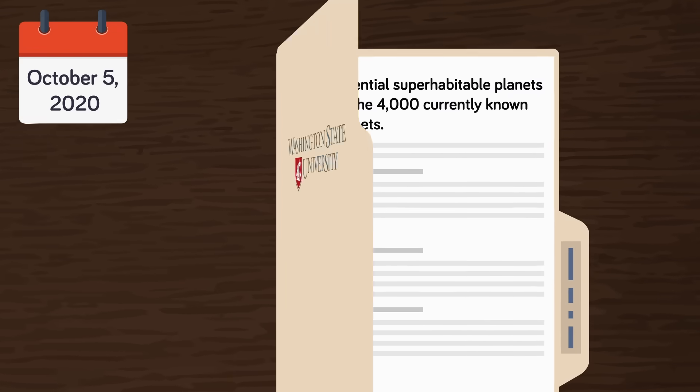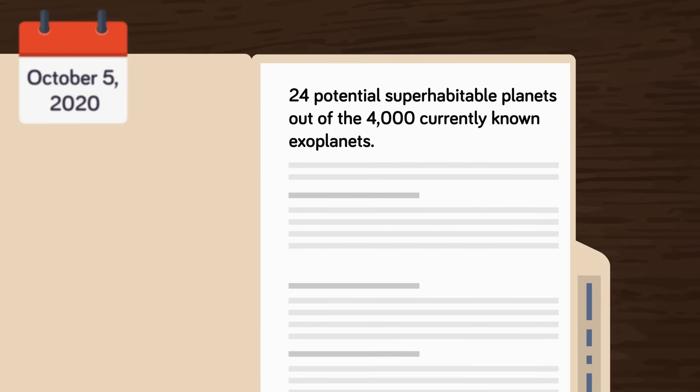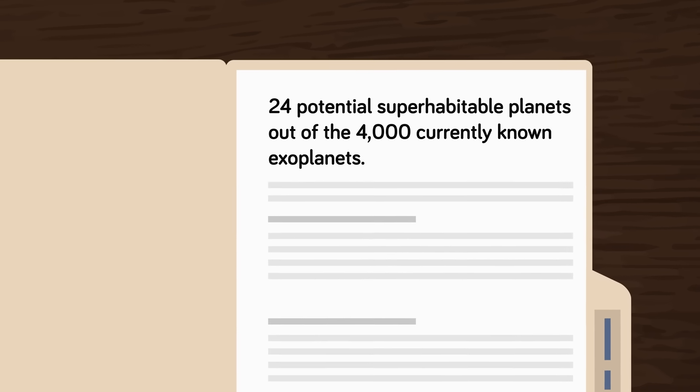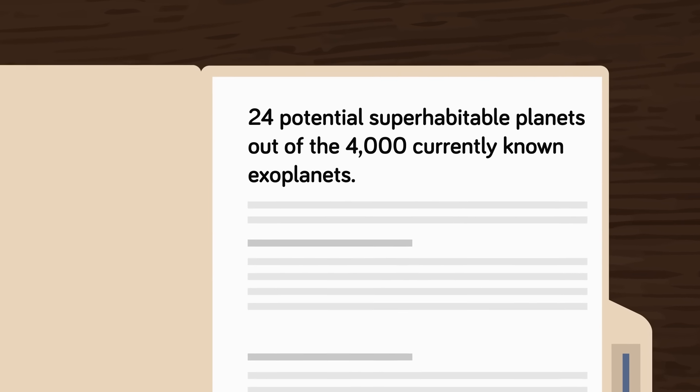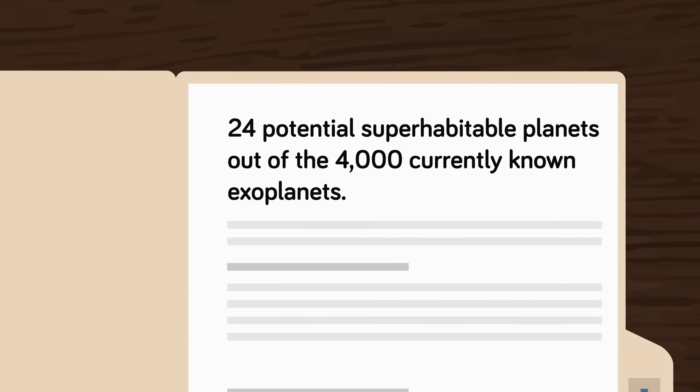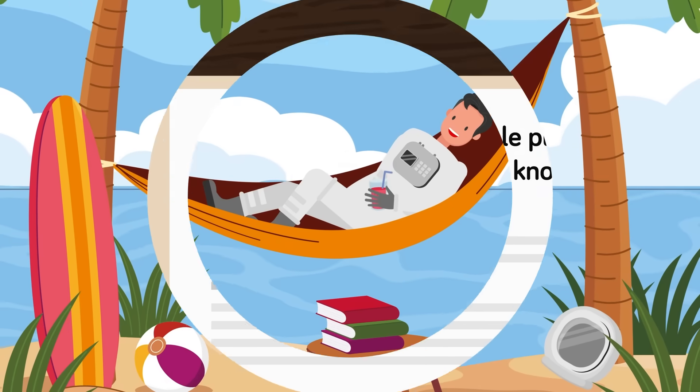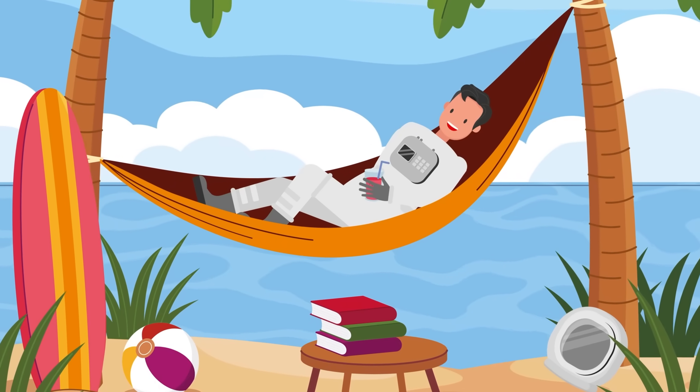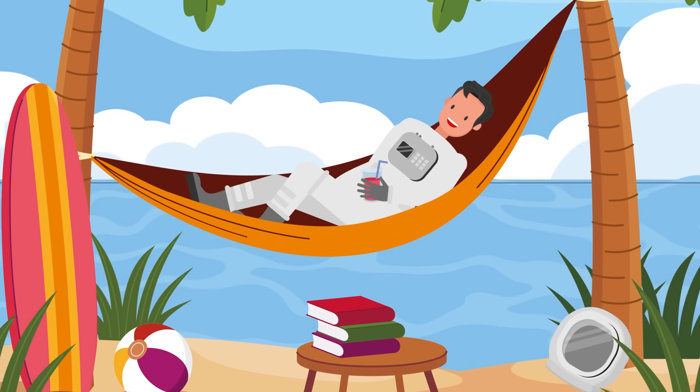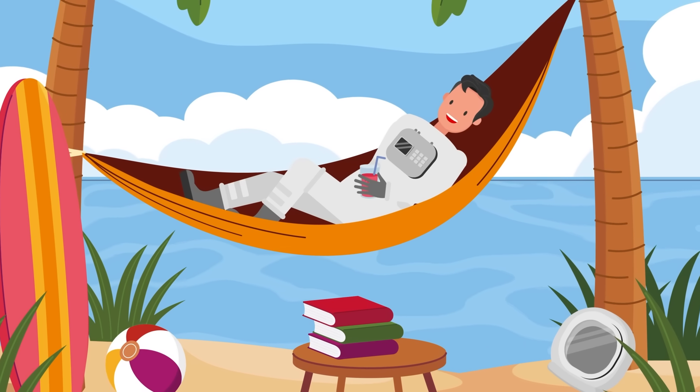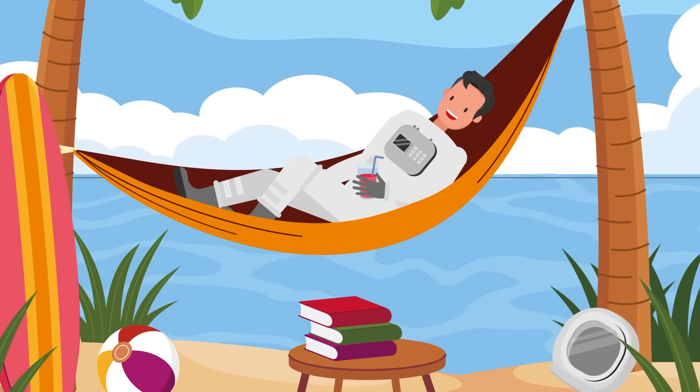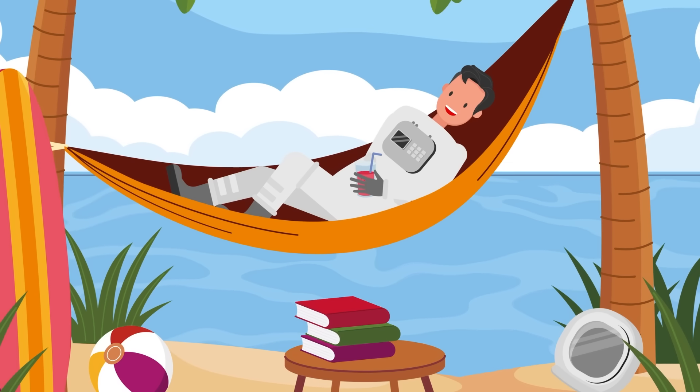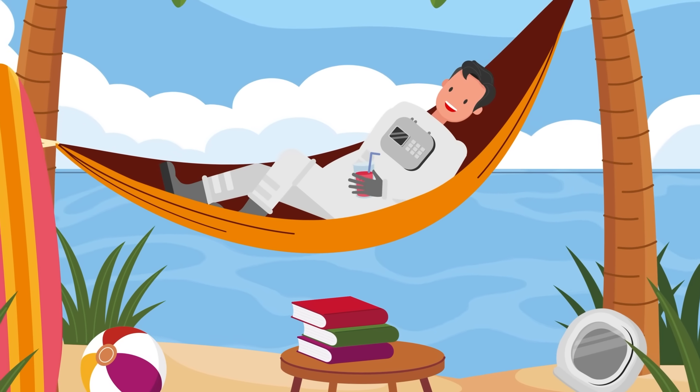On October 5th, 2020, researchers at Washington State University published a study identifying 24 potential super-habitable planets out of the 4,000 currently known exoplanets. The researchers found that ignoring super-habitable planets just because Earth is plain old habitable is probably an act of laziness and bias on humanity's part, settling for the bare minimum rather than trying to understand just how much better things can be out there.